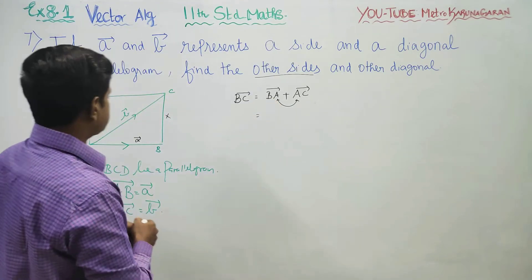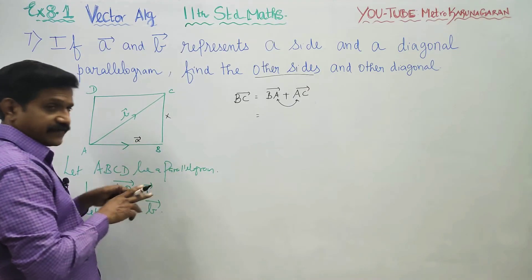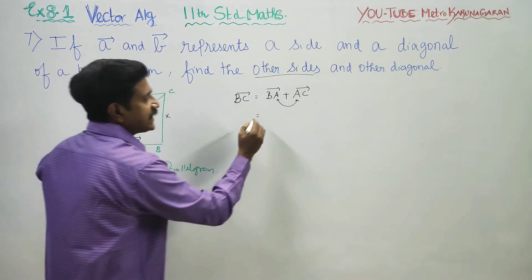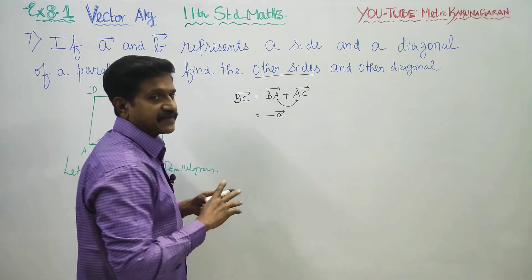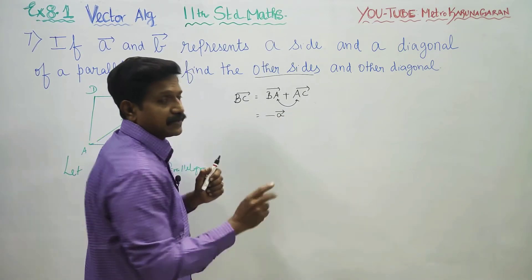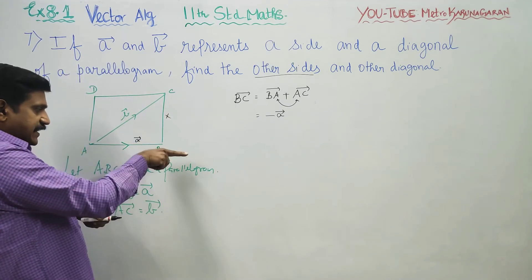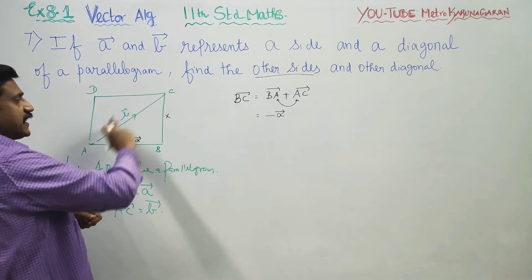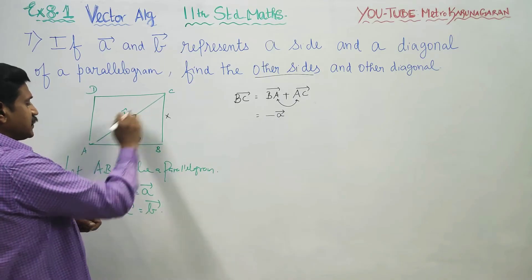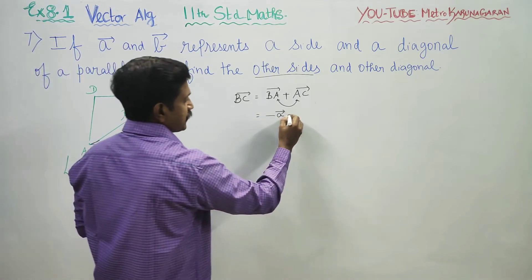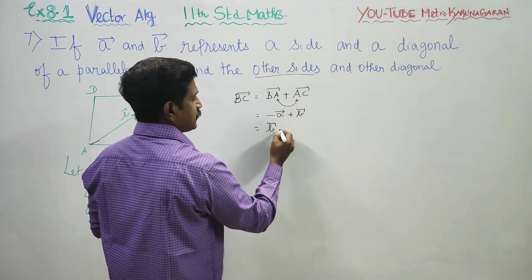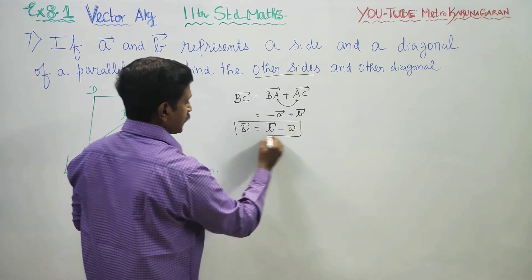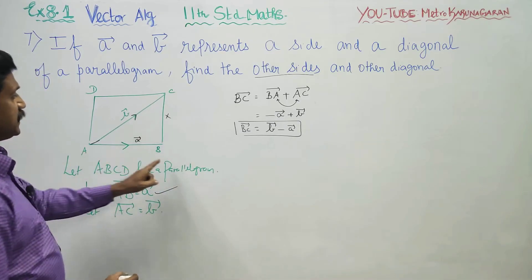Triangle law of addition. What is my BA vector? You can see here it is A vector, but in the opposite direction — so it is minus A vector. In vector algebra, if the direction is changed, it changes the sign. You can see here it is plus A in one direction, and minus A in the opposite direction. Direction has no change for B vector, so that is plus B vector. Therefore, BC equals B vector minus A vector. This is the first side — I have found my BC.